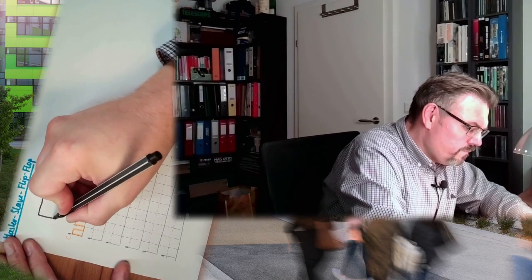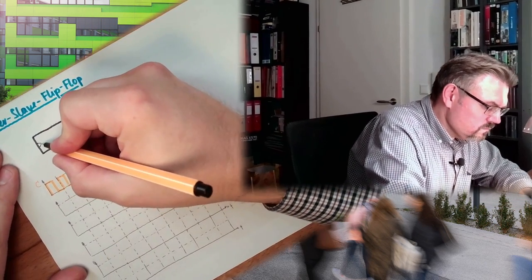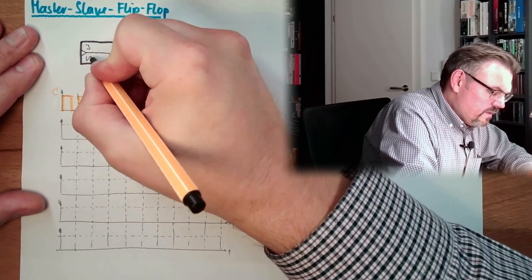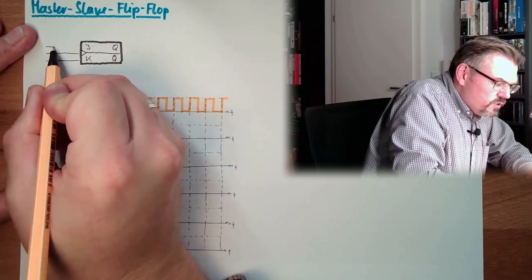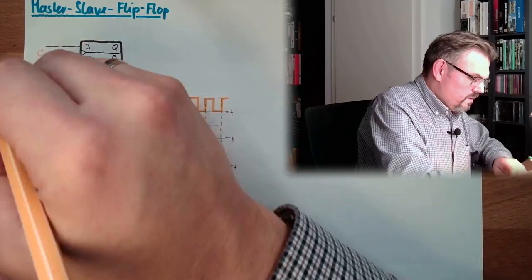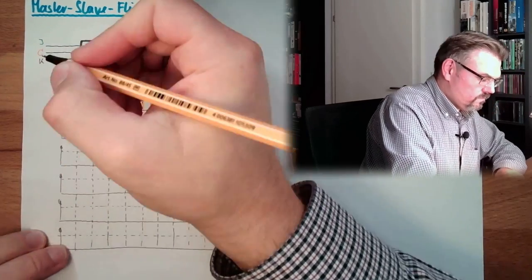So what is a Master-Slave Flip-Flop? Well, it's two flip-flops in one. So we have one flip-flop. Let's say this is a JK-type flip-flop. Then we have here the clock input, we have here the K input, we have here the J input. So here the clock, we have here the J input, and we have here the K input.